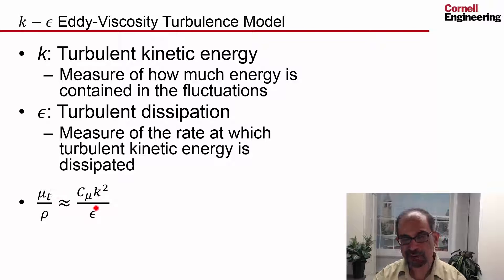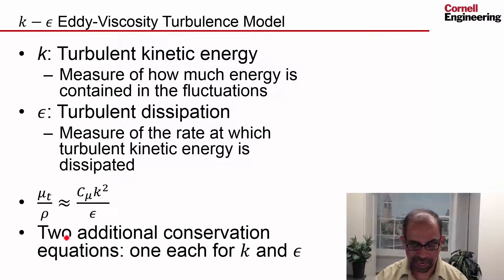So now, one needs to determine k and epsilon, and the k-epsilon turbulence model adds two additional conservation equations, one each for k and epsilon. It's pretty complicated. We don't have to worry about the conservation equations for k and epsilon, at least at this stage, because they are coded into ANSYS Fluent.